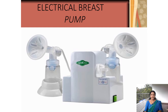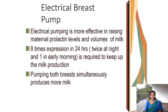The electrical breast pump works using electricity and is more effective in raising maternal milk production levels and volumes. Expression can be done eight times in 24 hours — two times at night and once in the early morning — totaling eight times per day. This type of expression enhances breast milk production. Pumping both breasts simultaneously produces more breast milk, which is why the electrical pump is more effective.